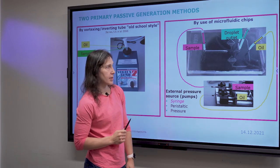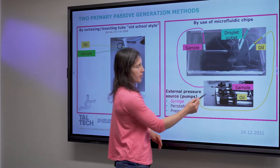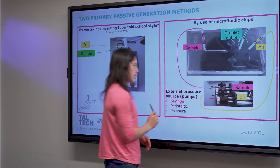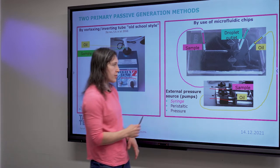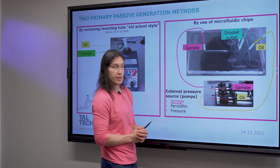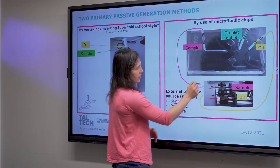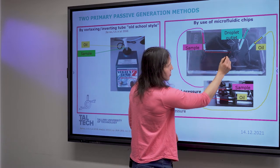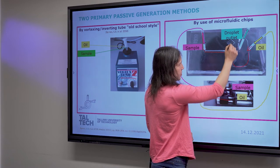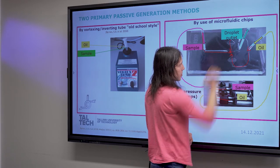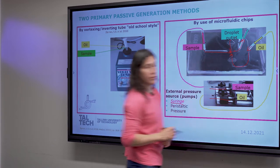Here we have a PDMS chip — this is actually what we use in our lab. We also have it coupled to two syringes, which are the external pressure source. There could also be different pressure sources, but here we use syringes. Through this, we can control the flow rate of the oil and the sample. The sample comes in one way, and the oil comes in from two sides, where they meet at this co-flow region.